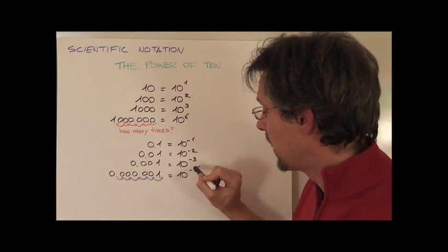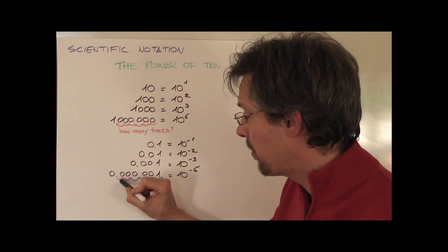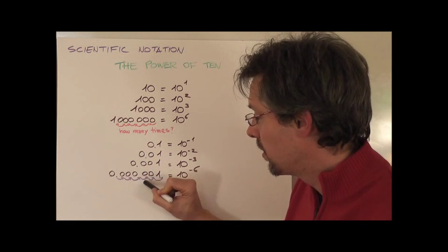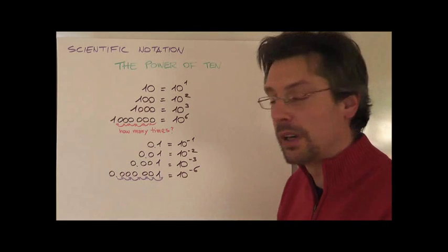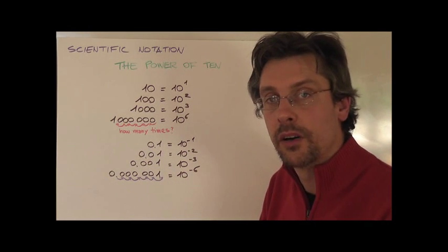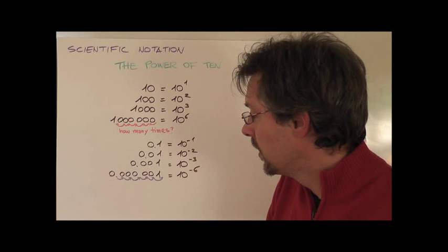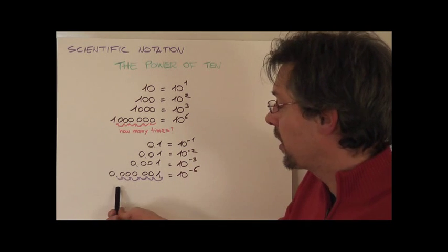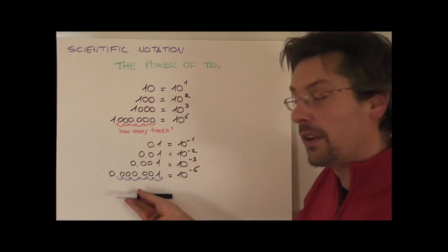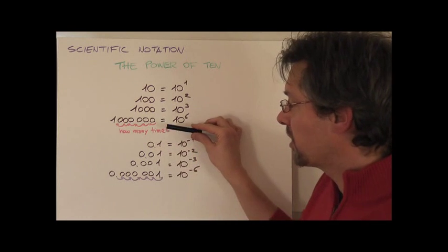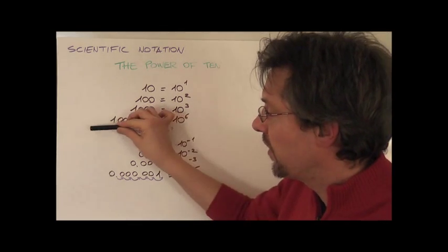And as you can see, again, I get this number by counting how many times I'm moving my decimal point to the right of the digit 1. And I'm getting a negative number because I'm going in this direction. I will get a positive number if I'm moving in this direction.